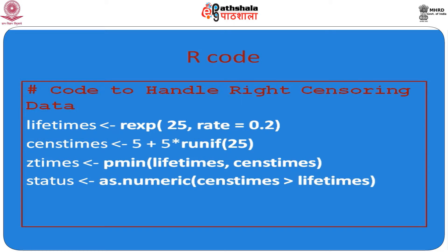This is the way to handle censoring observations using randomly generated data. For real-life data, status can be assigned using as.numeric() where observations with values greater than a threshold are considered events, while those with censoring times greater than lifetimes are classified as censored status.